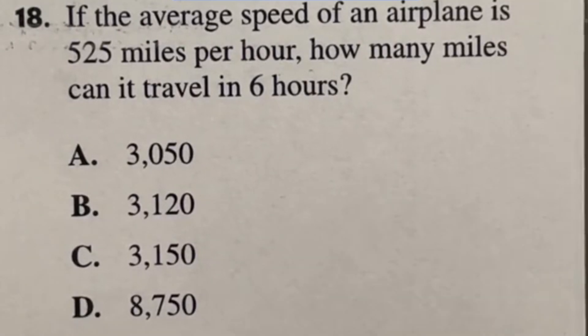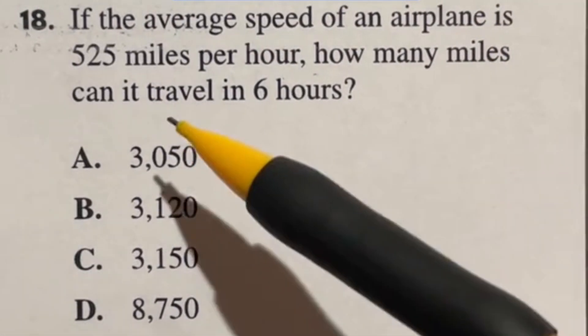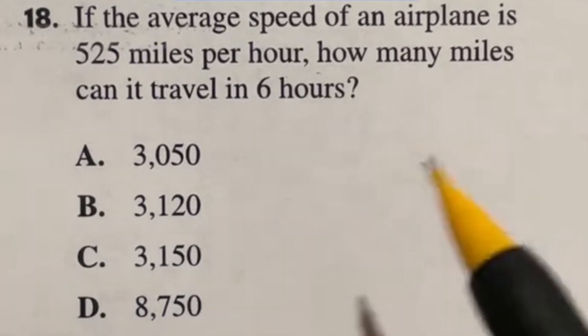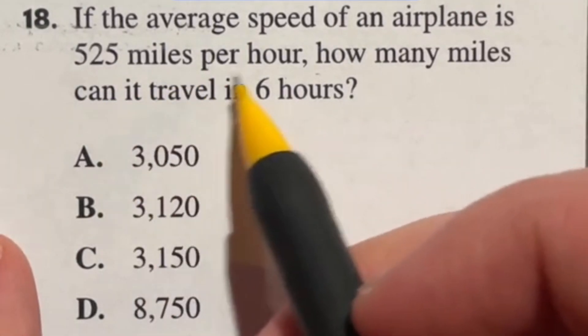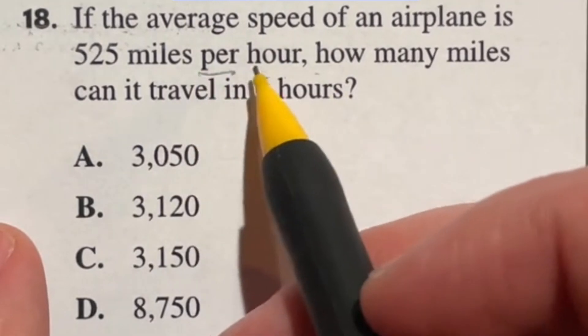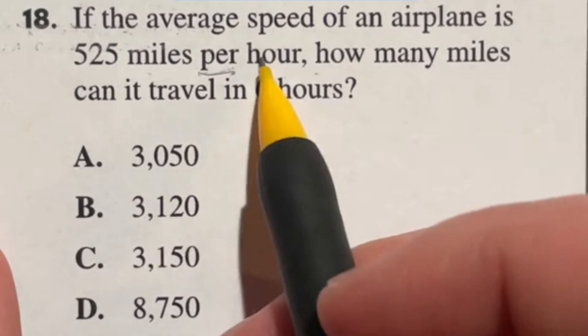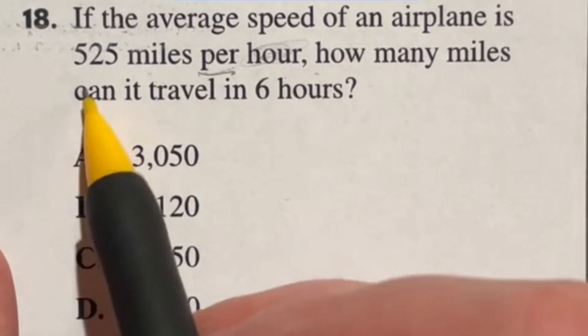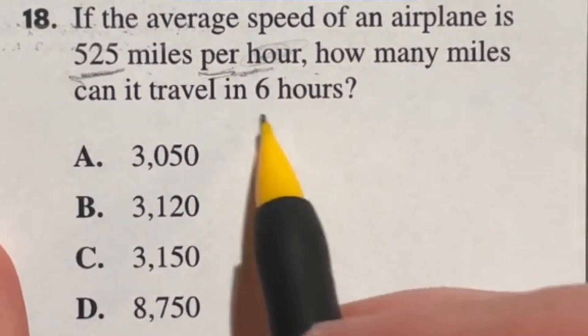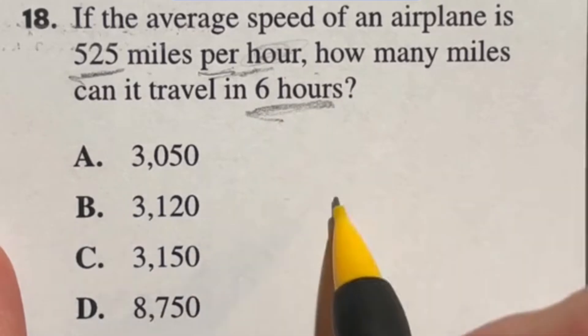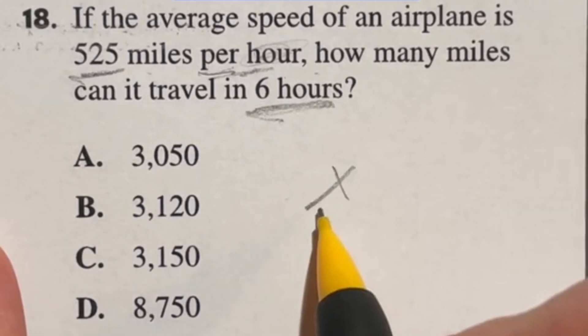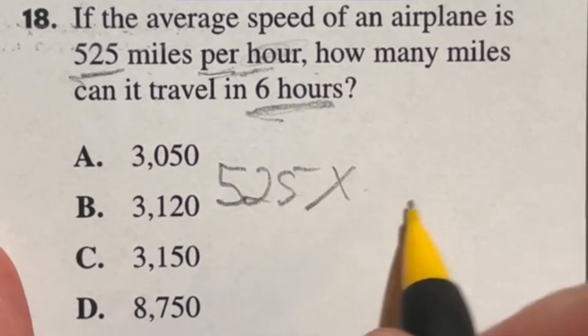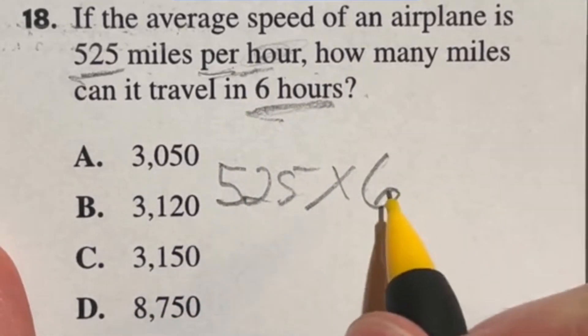Number 18 on the ASVAB says if the average speed of an airplane is 525 miles per hour, how many miles can it travel in 6 hours? So here's the deal. We're going 525 per hour. So usually that per tells us that it's division, but in this case notice it says per hour, it's not actually dividing by the hours right here. So it's telling us it can be this many in an hour and then it's traveling for 6 hours. So this is actually a multiplication question because if I do 525 miles per hour and I do that 6 times for 6 hours, I'm multiplying by 6.